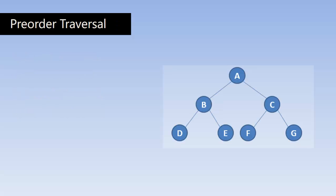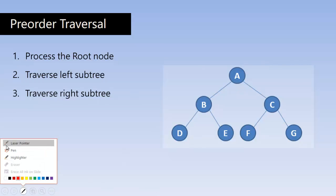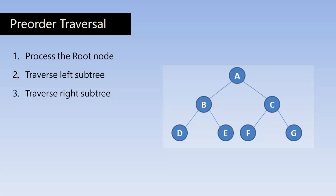So first, let's understand the pre-order traversal. First, process the root node, then traverse left subtree, then traverse right subtree. Let's consider this as our example tree. Starting from the root, we process the root node and print it on the output.